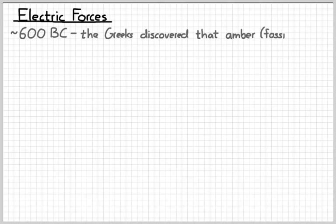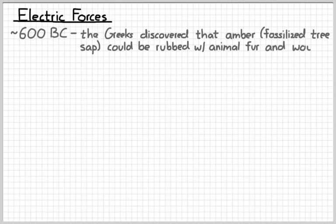But the story kind of has a weird beginning. Circa 600 BC, the Greeks, those ancient folks that were kind of smart and stuff, discovered that if you took fossilized tree sap, which you might give the name amber to that, and you rubbed it with animal fur, that it would then attract some small objects.